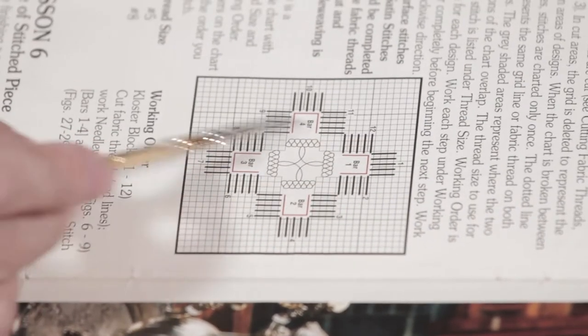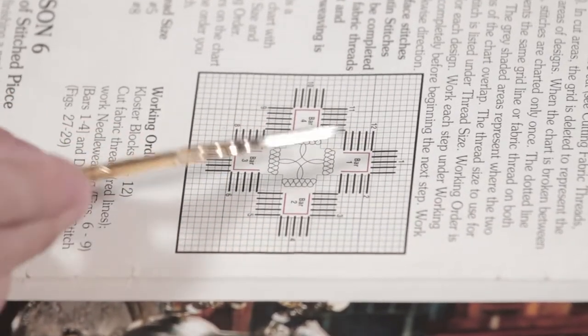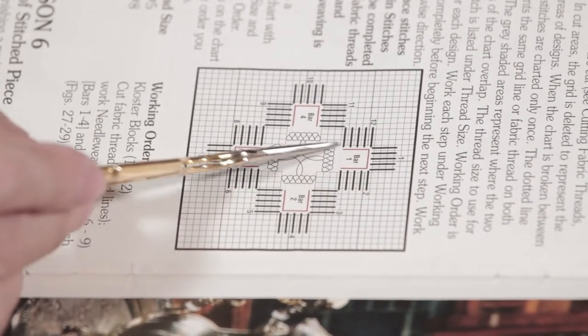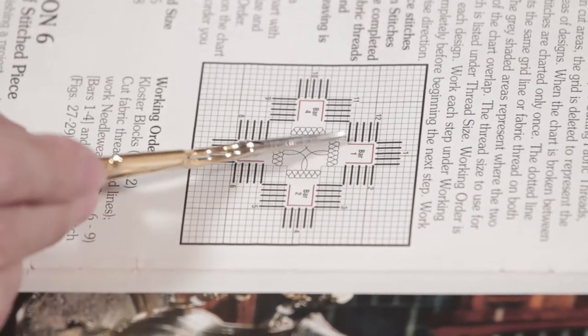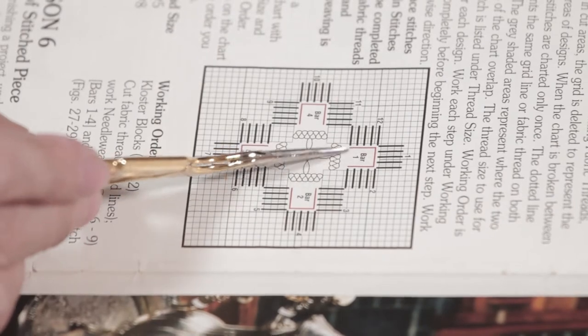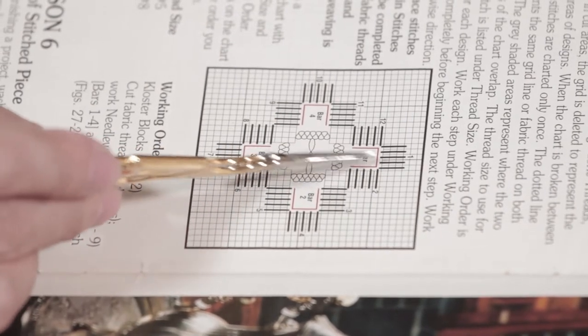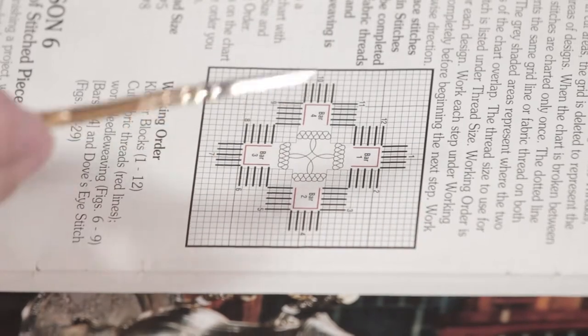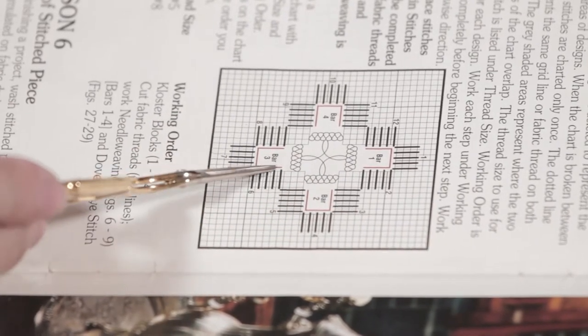You will see that there are red lines here. These red lines are your cutting lines. This is where you're going to cut here, here, here. These are your cutting lines here and here.